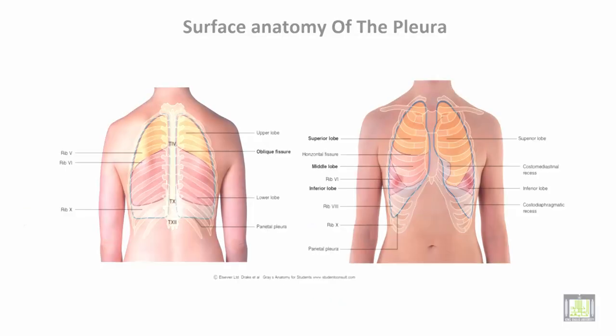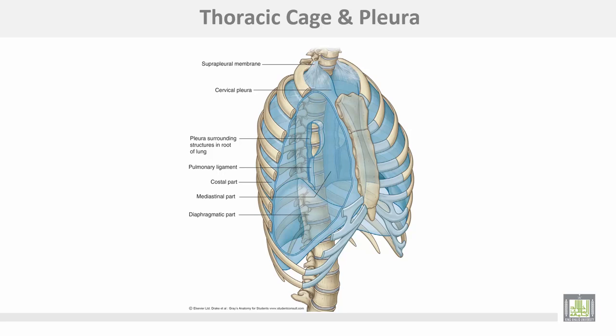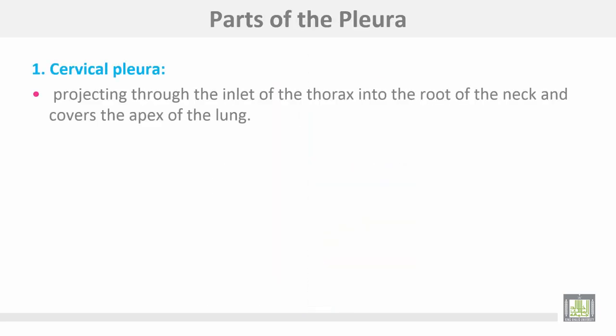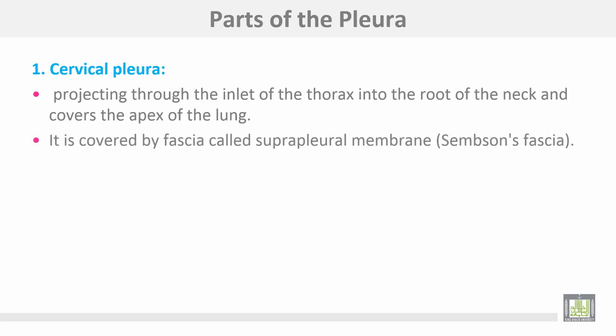The surface anatomy of the pleura — this is the pleura and its parts on the diagram. Cervical pleura projects through the inlet of the thorax into the root of the neck and covers the apex of the lung. It is covered by fascia called the suprapleural membrane, or Sibson's fascia.